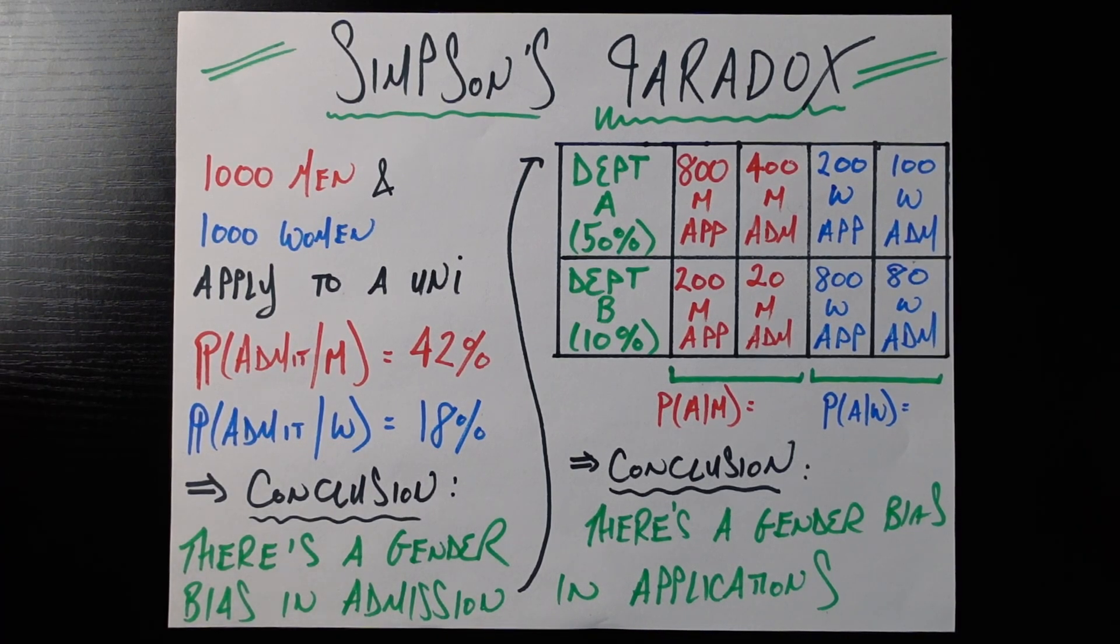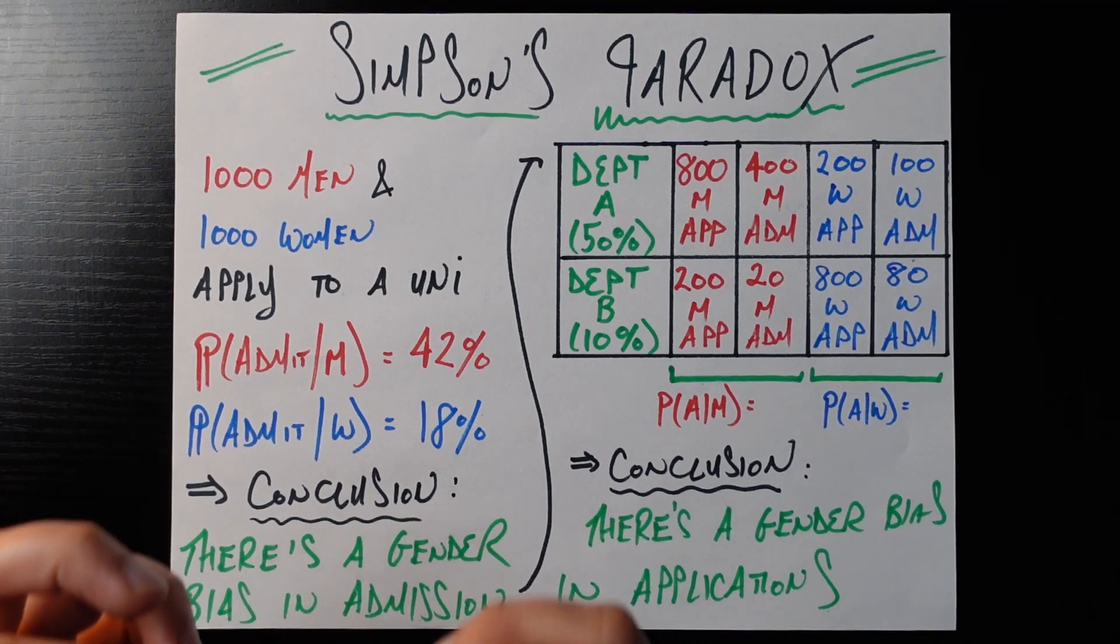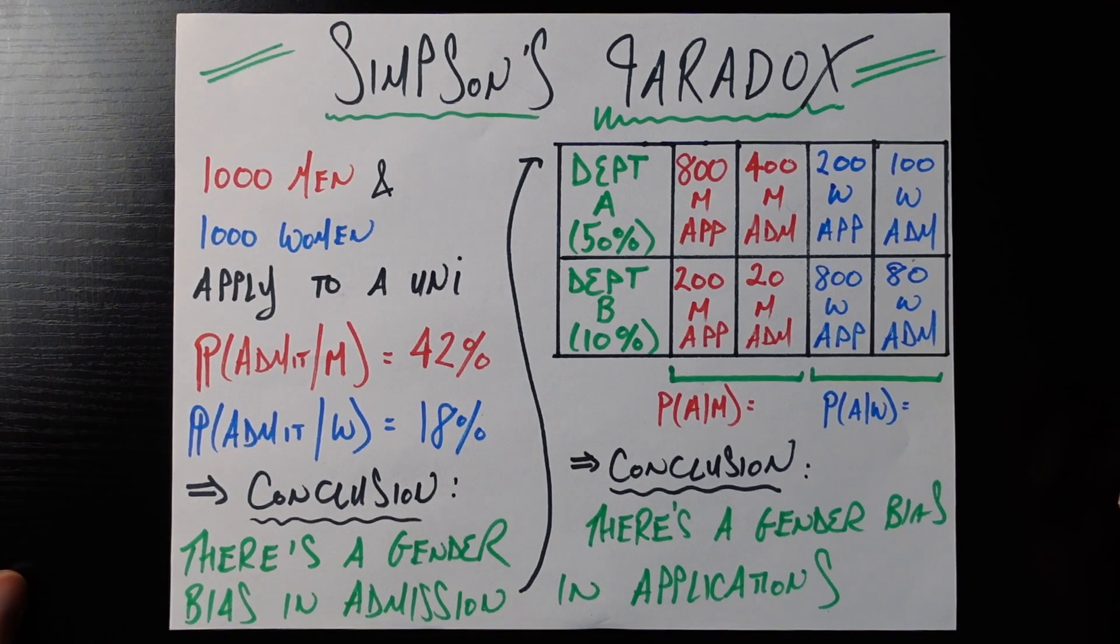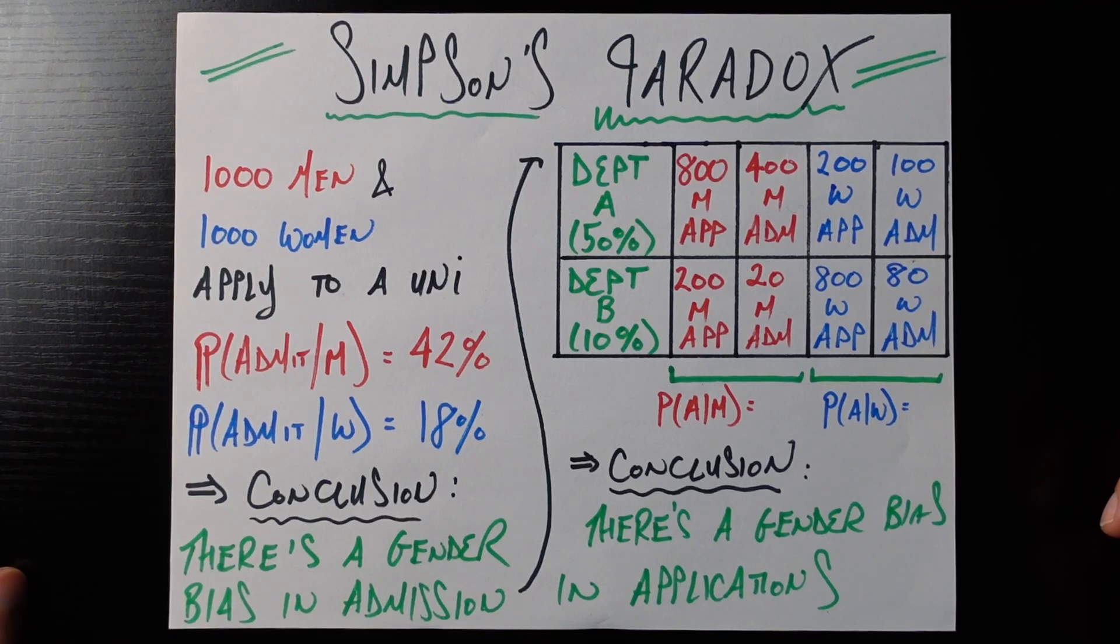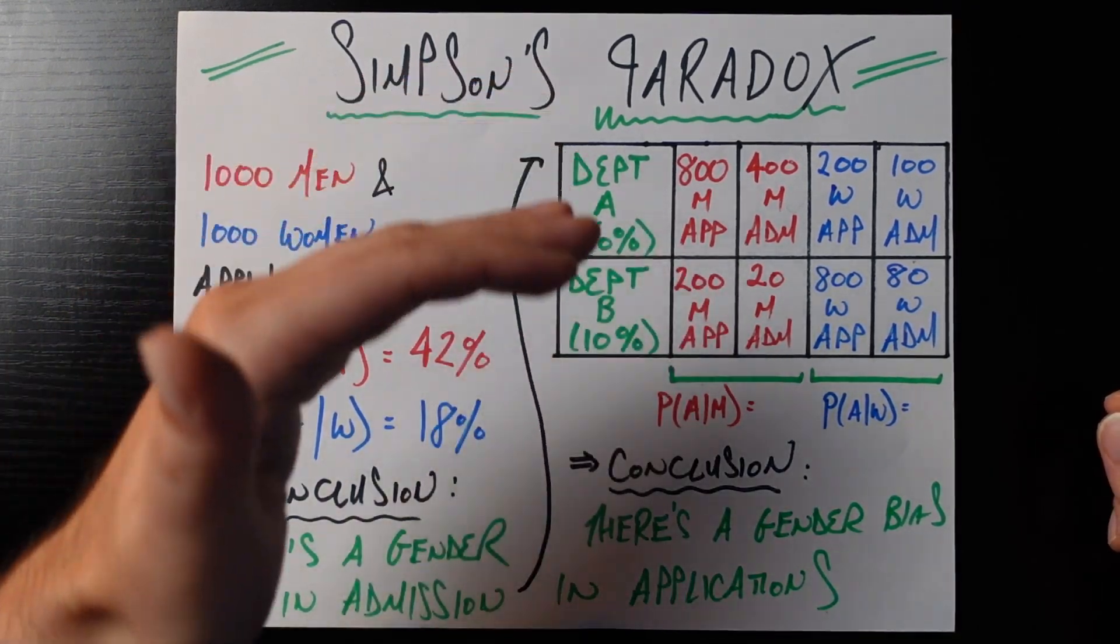But if we took an extra second to break down this data by a different confounding variable, the department to which people applied, then we would get the full story. So let's continue and look through it in that lens. Let's say there's just two departments at this university for simplicity, Department A and Department B.